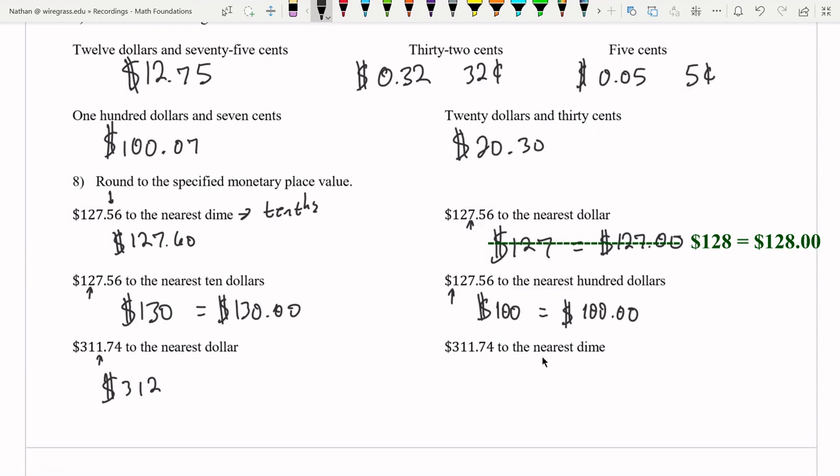And to the nearest dime. Once again, this is the tenths spot. That's going to be the seven. The testing digit is four. So that's not going to be rounded up. So we're going to have $311.70. That's rounded to the nearest dime.